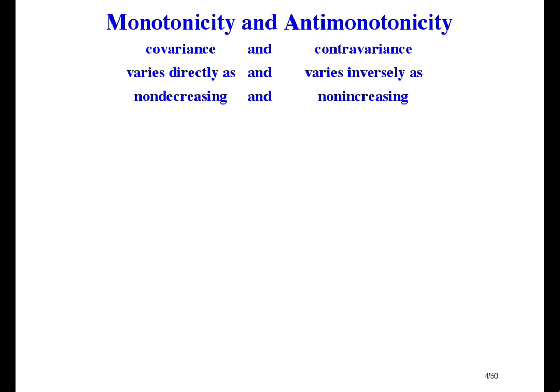We've been talking about binary theory and we've pretty well covered it, but there are a couple of advanced tricks I'd like to tell you about. The first one is called monotonicity and anti-monotonicity. Some people call it covariance and contravariance. In high school I learned to say varies directly as and varies inversely as. Or we could say non-decreasing and non-increasing, or even sorted and sorted backwards.